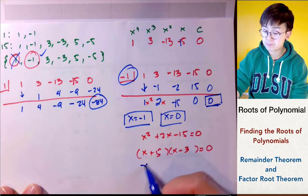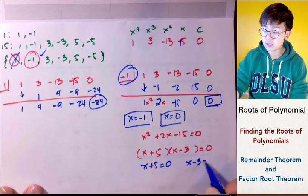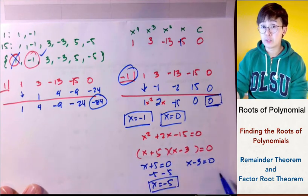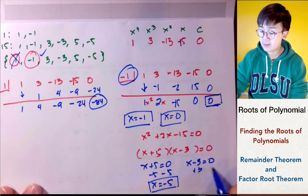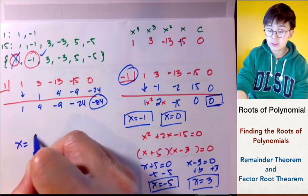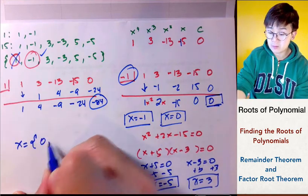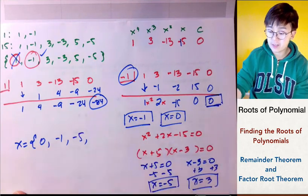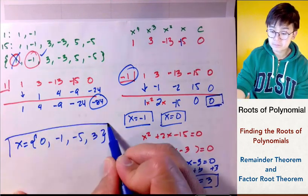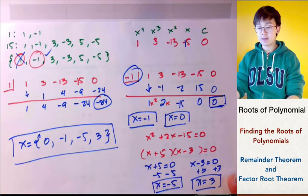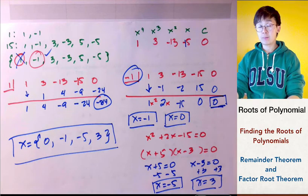Using the zero product property: x plus 5 equals 0 and x minus 3 equals 0, giving x equals negative 5 and x equals 3. So the four solutions of our fourth-degree polynomial are 0, negative 1, negative 5, and 3. This is how we use the factor theorem to find the solutions of a polynomial.